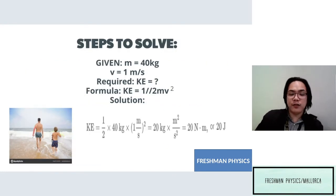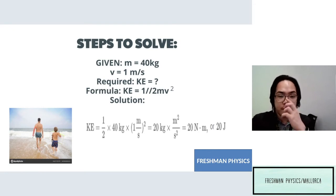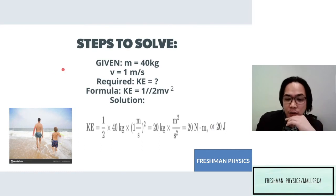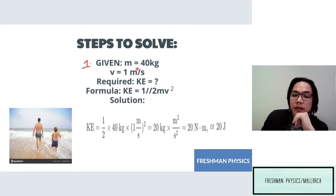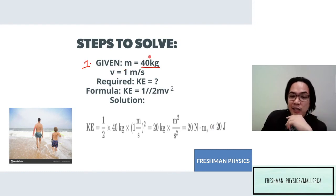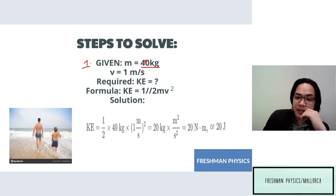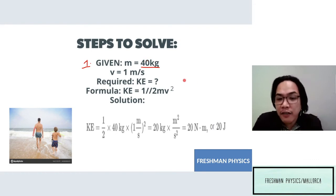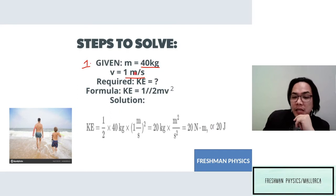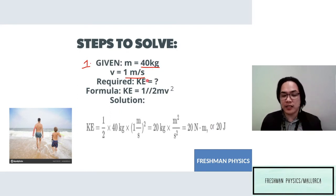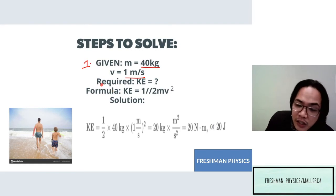Here are the steps to follow in solving for kinetic energy. Step one: understand the problem and identify the given values. Based on the problem, mass equals 40 kilograms — you know it's mass because the unit is kilograms. Then you have velocity, which is 1 meter per second — you know it's velocity because the unit is meters per second.